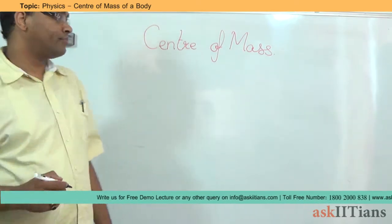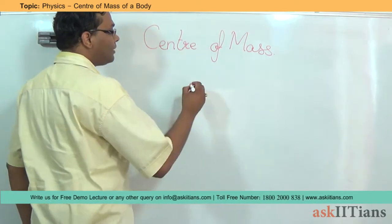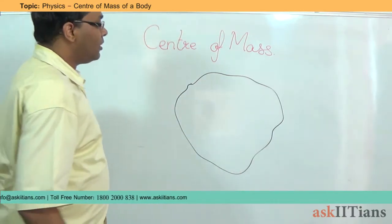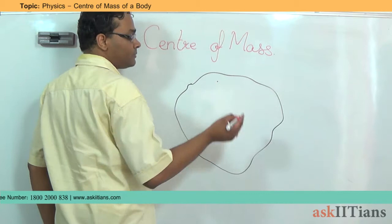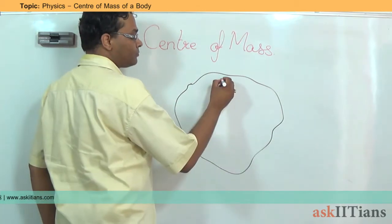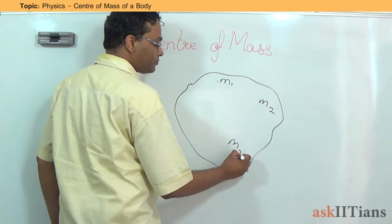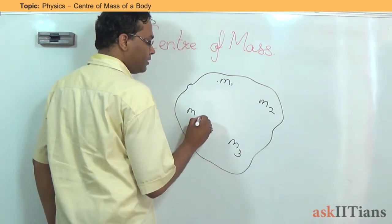So let's say, if we take any arbitrary shaped object, something like this. Here, let's assume that there are discrete masses within it: M1 here, M2 here, M3 here, M4 here.